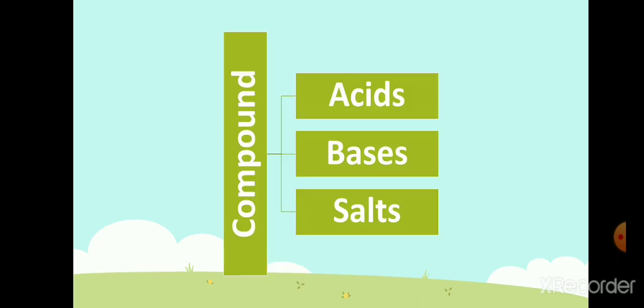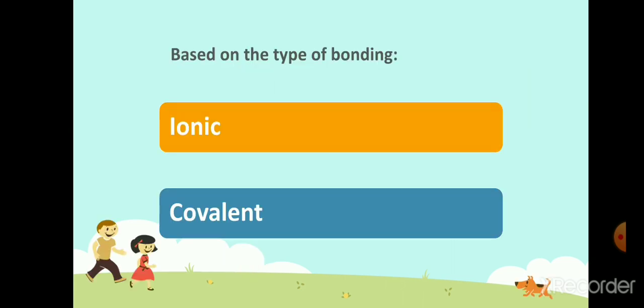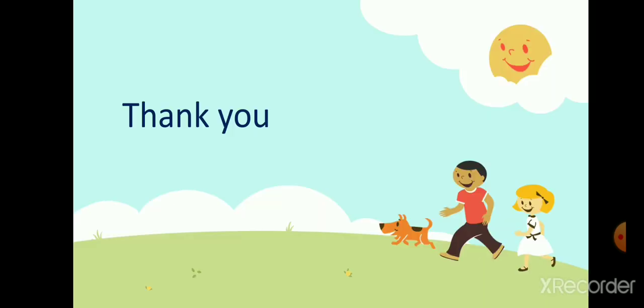Based on properties, compounds can also be classified as acids, bases, and salts. And based on the type of bonding, compounds are mainly of two types — ionic and covalent. I hope this is all clear to you all. This is all for this video. We will read in detail about mixtures in our next video. Till then, bye-bye and keep reading. Thank you for watching.